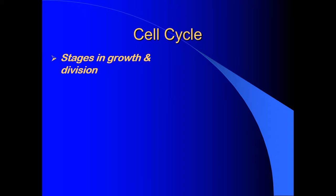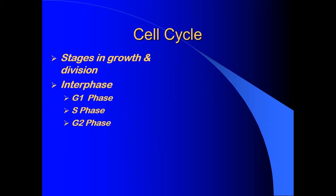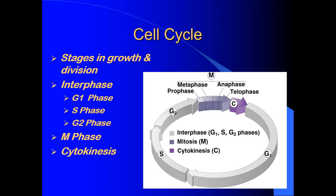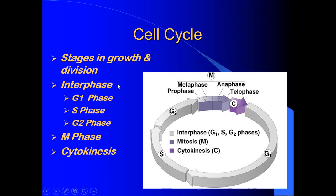The cell cycle has several stages in its growth and division. There's a stage called interphase, which has three substages: the G1 phase, the S phase, and the G2 phase. And then there's the M phase, or mitosis. And then finally, there's cytokinesis. This happens as a cycle, meaning there's no real start or end to the process. But generally, when we're learning about the cell cycle, we start by talking about interphase.